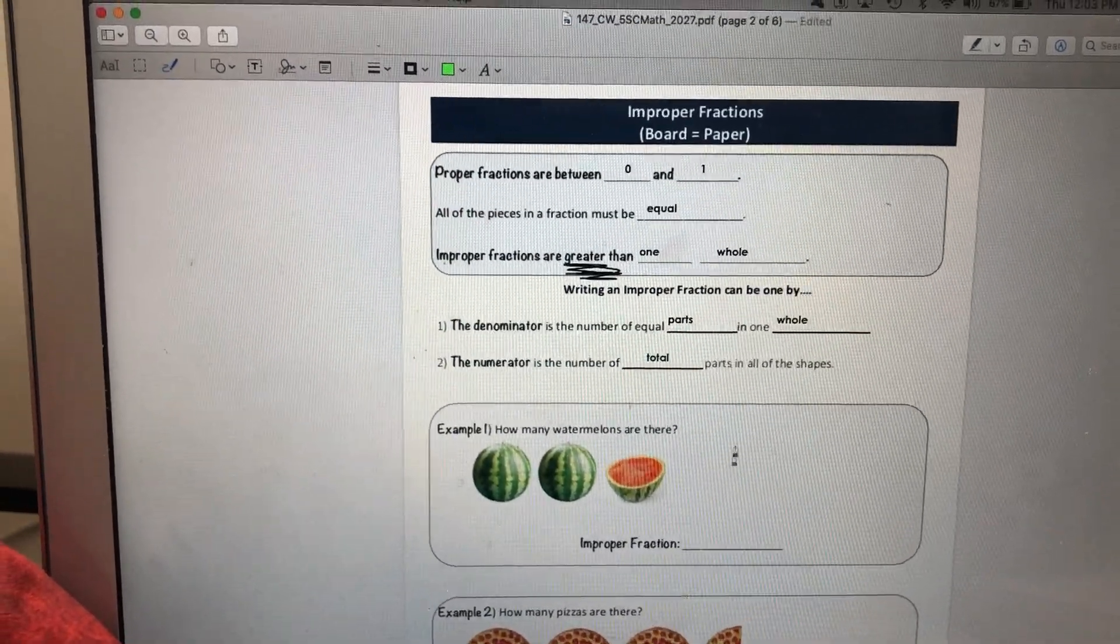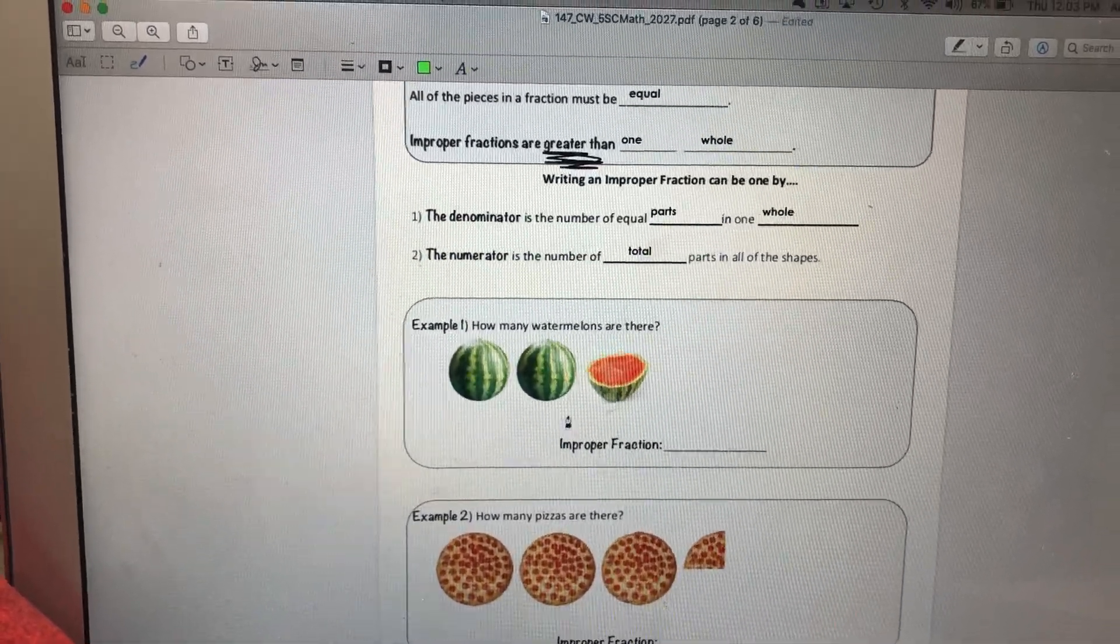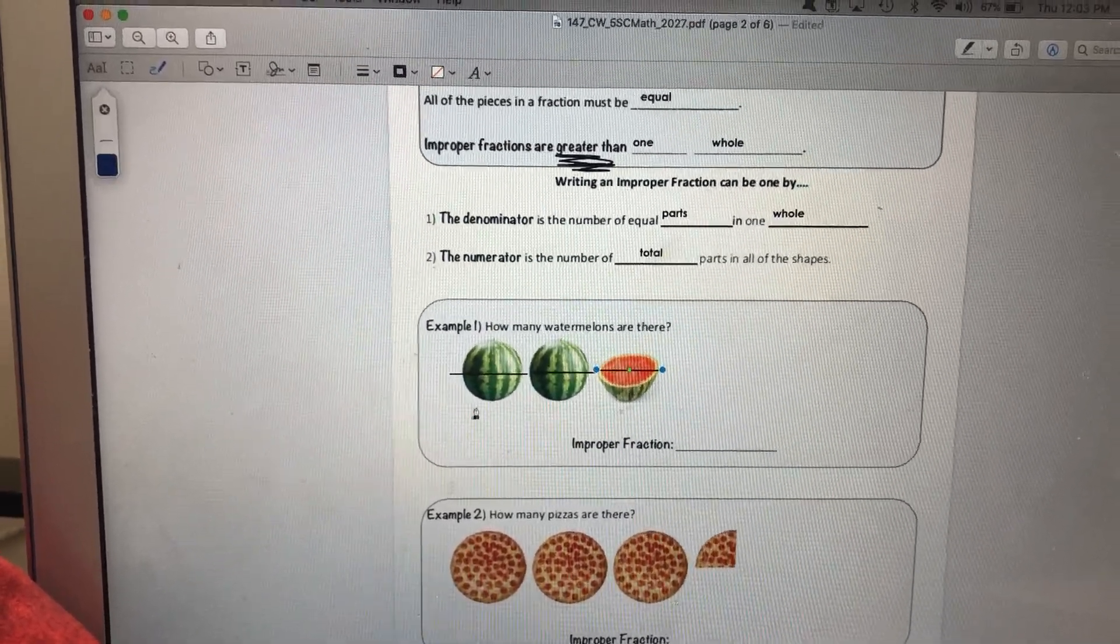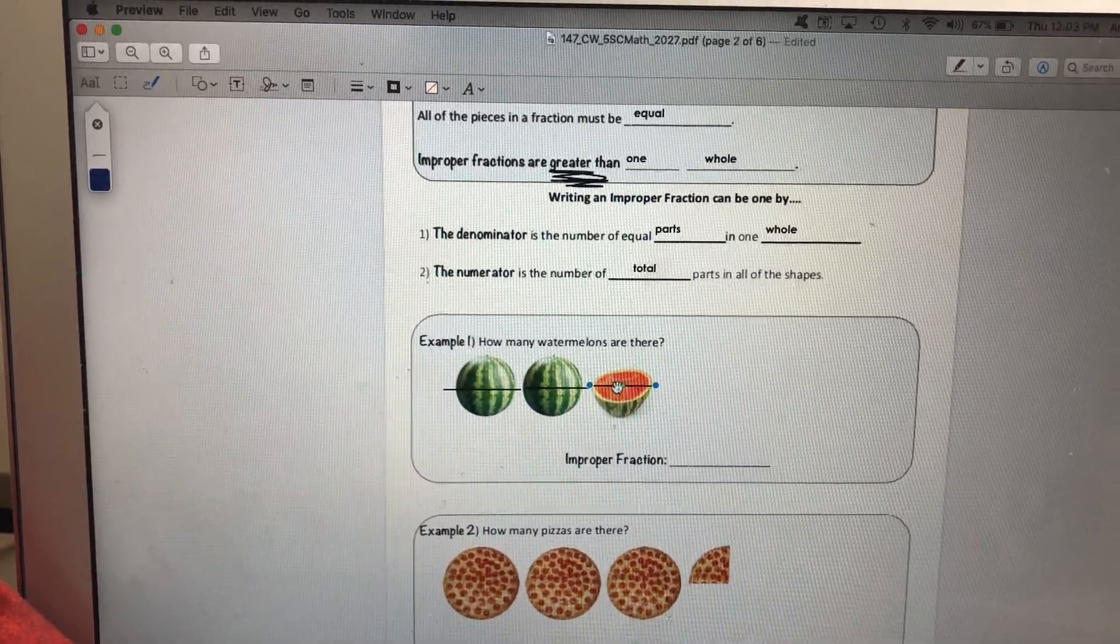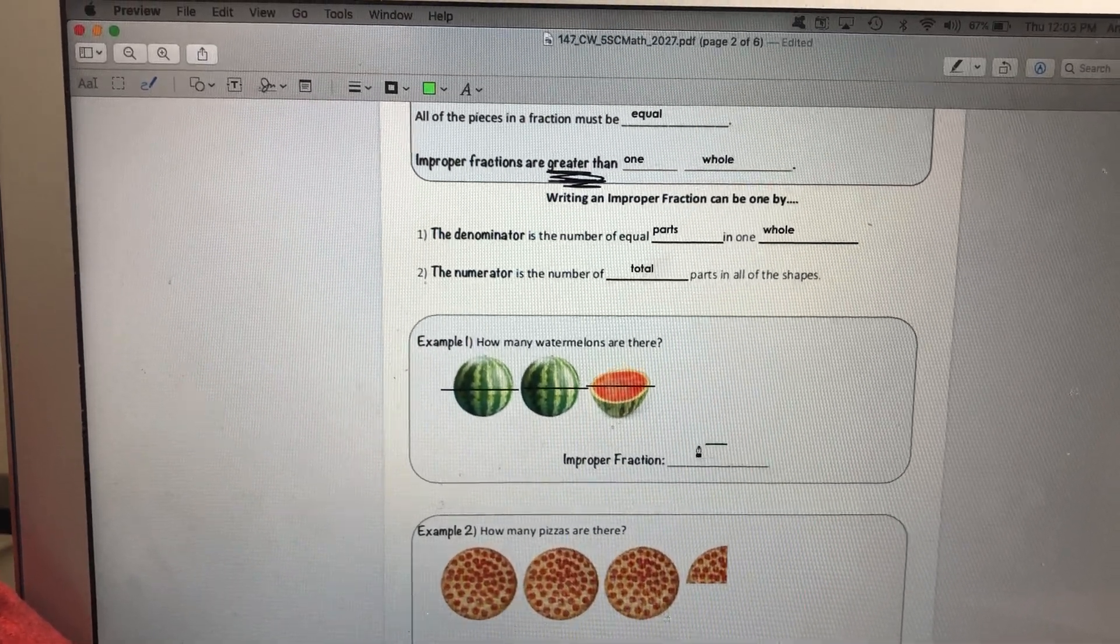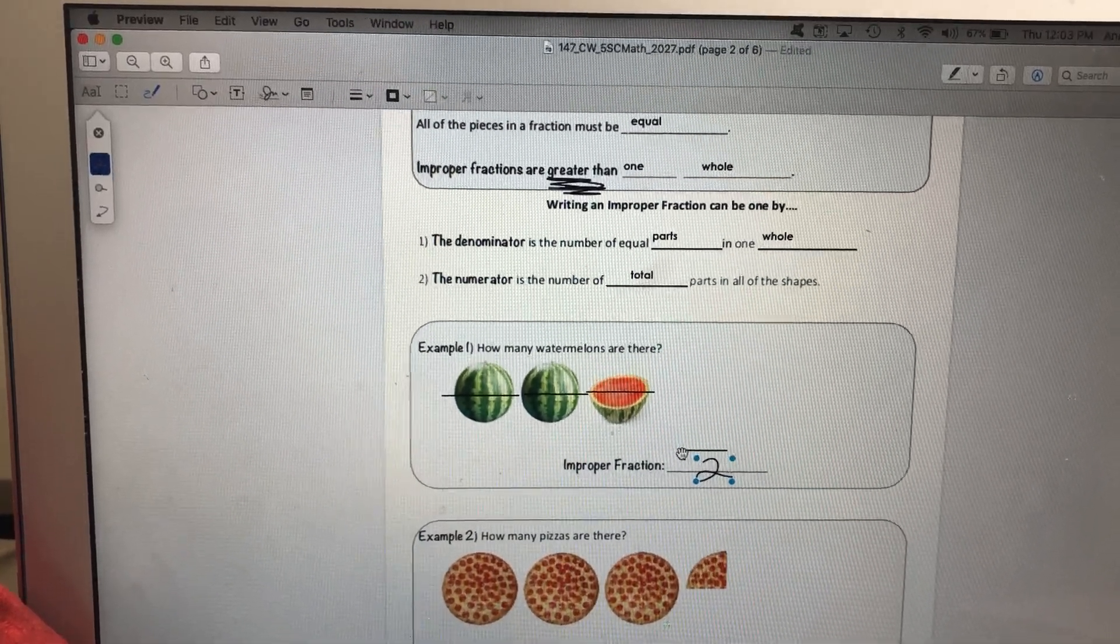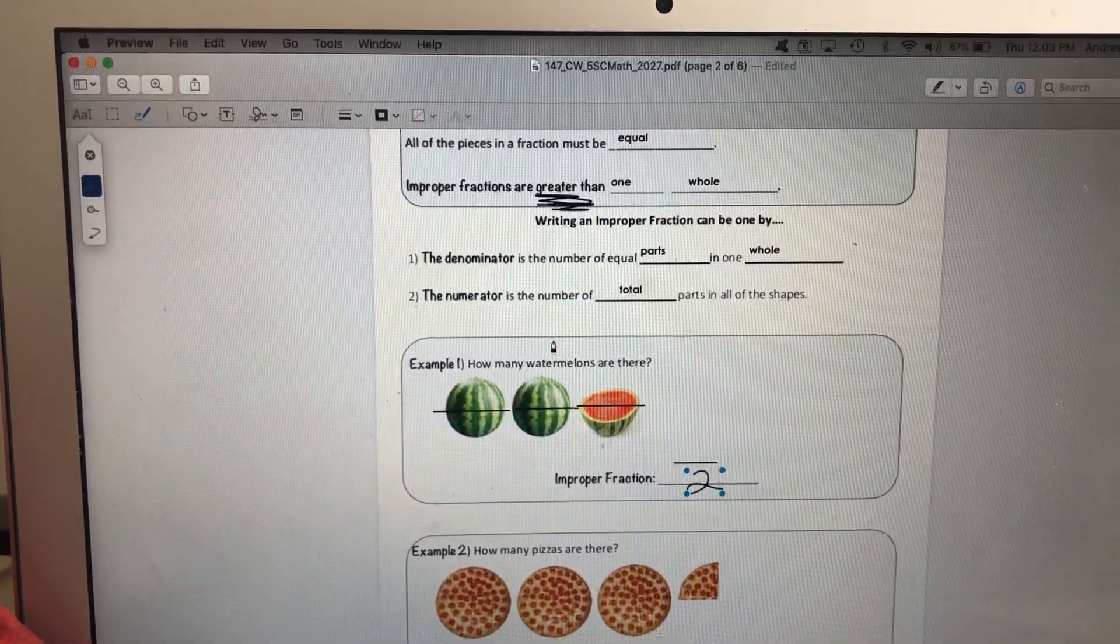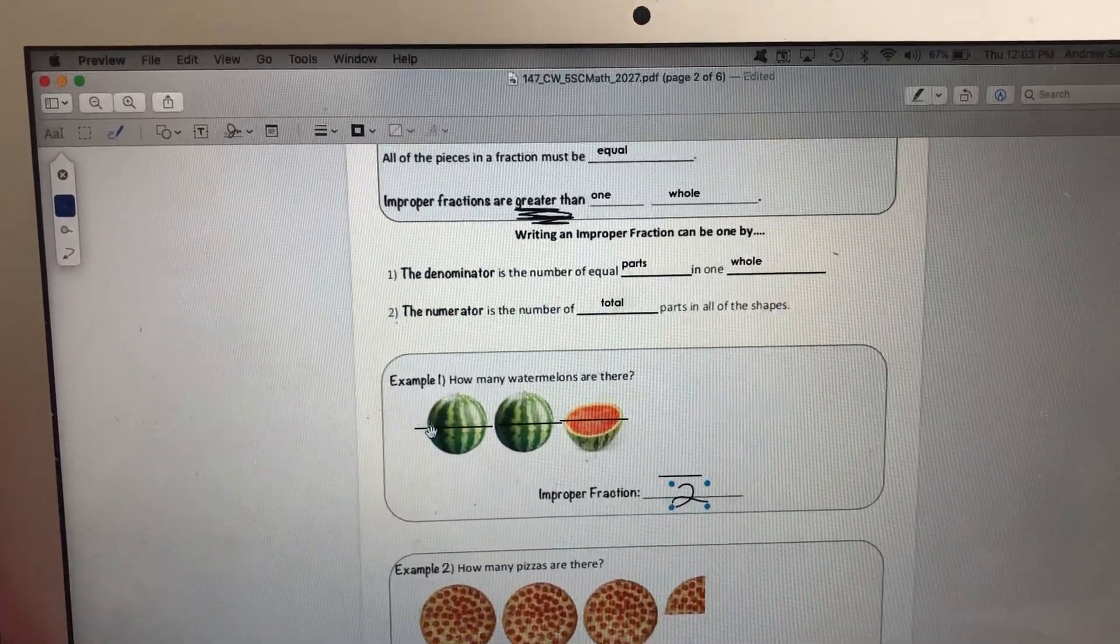So if we look at this example right here, how many watermelons are there? I first see that each of these is divided into two parts. So the total number of equal parts in one of my whole is 1, 2. So that means my denominator is going to be 2. Now I need to ask myself, what is the number of total parts in all of the shapes? For the denominator, I just look at one shape.